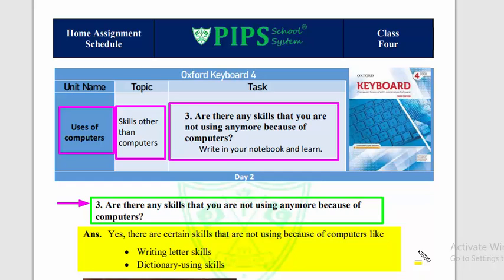Similarly, for dictionary using skills: firstly we were used to finding words and their meanings from the dictionary manually, but now we are using dictionary apps on mobile phones or computers to find words, their meanings, and even how to pronounce them. So dictionary using skills are not being used anymore because of computers.